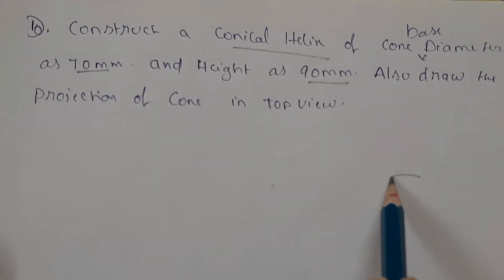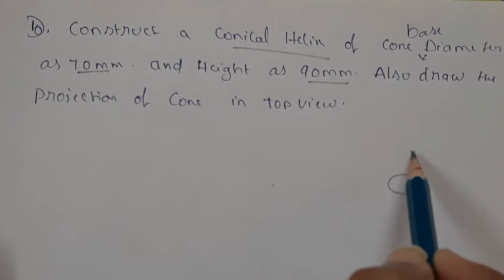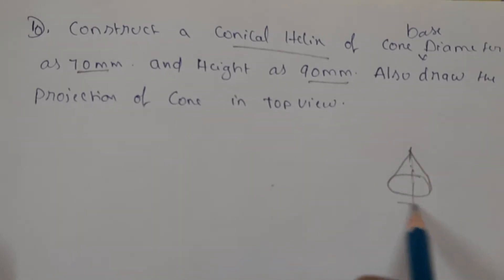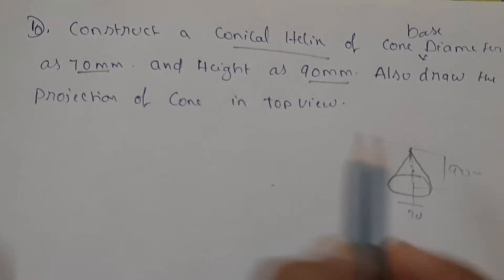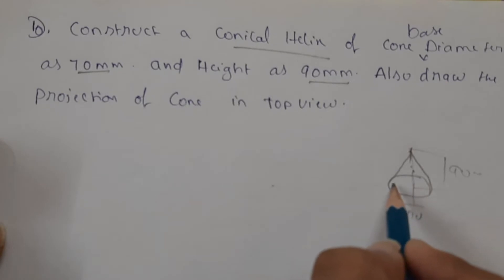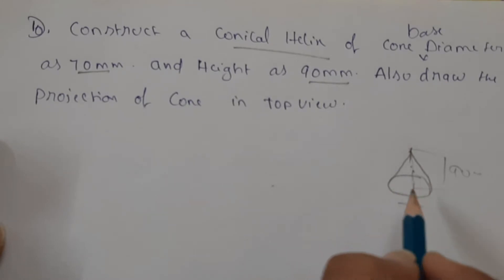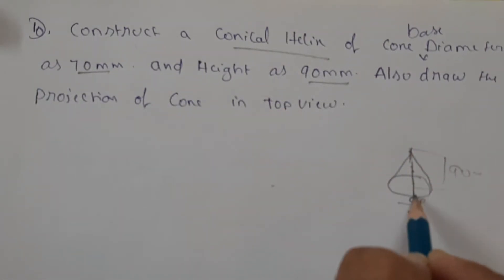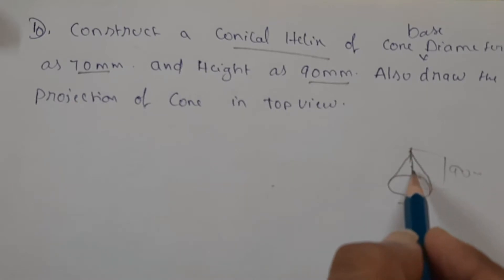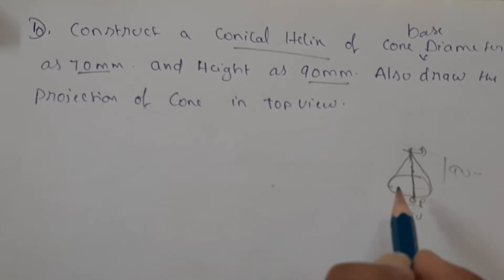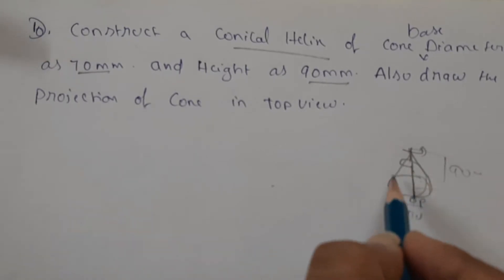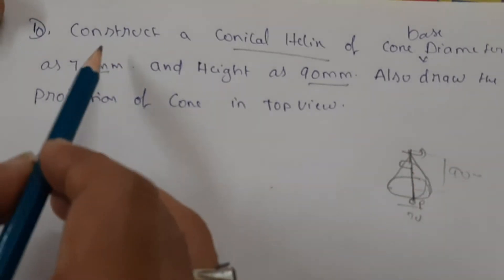Here, this is the cone. The base is 70 mm and the axis is 90 mm according to this question. Helix means it is the path traced by a point where it is moving axially on a body and the body also should rotate. Consider this is the point — point P is moving from here to here, and this cone is also rotating about this axis. So the point will move like this.